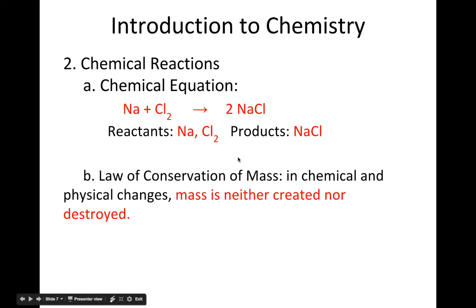And then in chemical reactions and chemical equations we have the law of conservation of mass. So in chemical and physical changes, mass is neither created nor destroyed. So however many, however much reactants we start out with, we need to have the same amount of products.